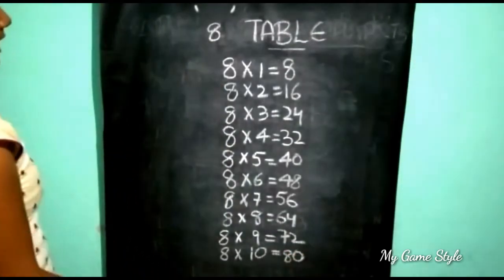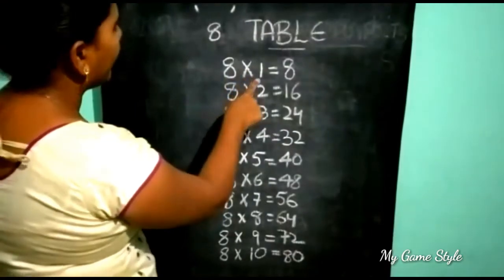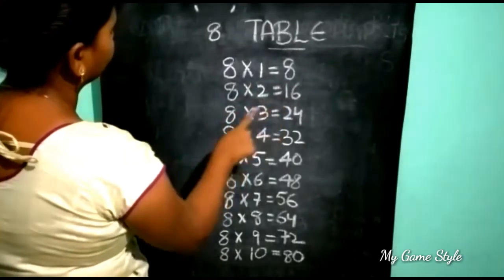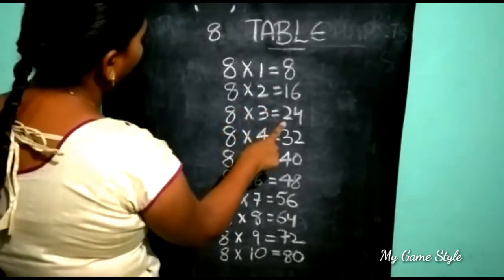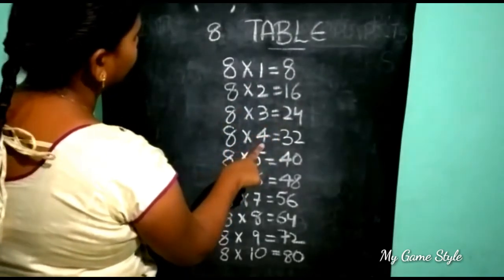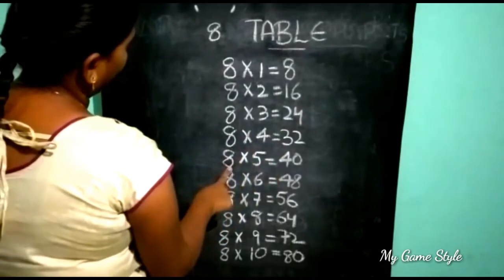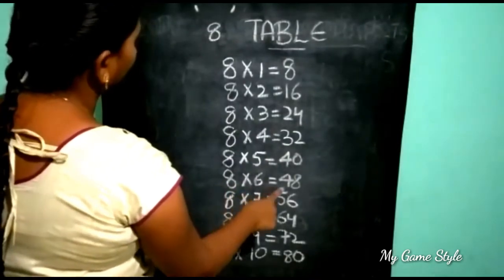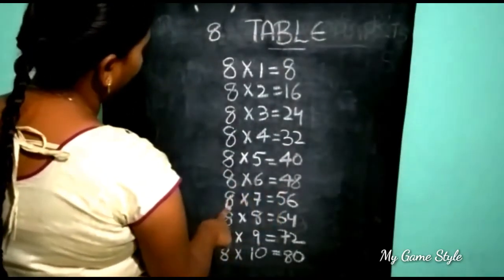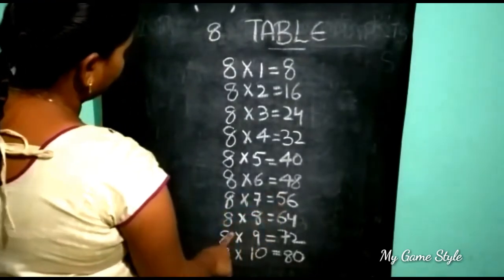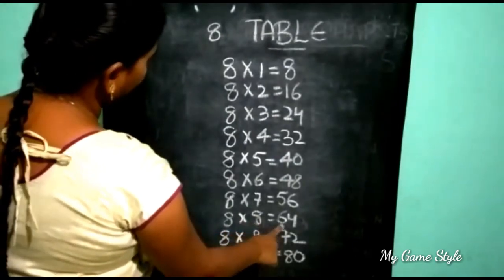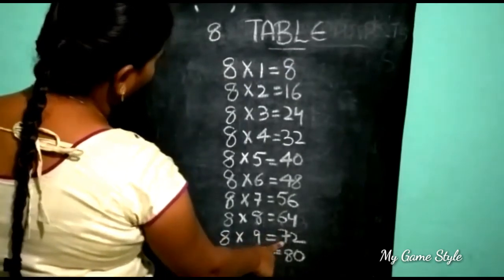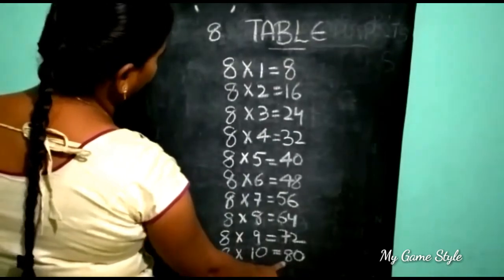Again, we should learn. Eight ones are eight, eight twos are sixteen, eight threes are twenty-four, eight fours are thirty-two, eight fives are forty, eight sixes are forty-eight, eight sevens are fifty-six, eight eights are sixty-four, eight nines are seventy-two, eight tens are eighty.